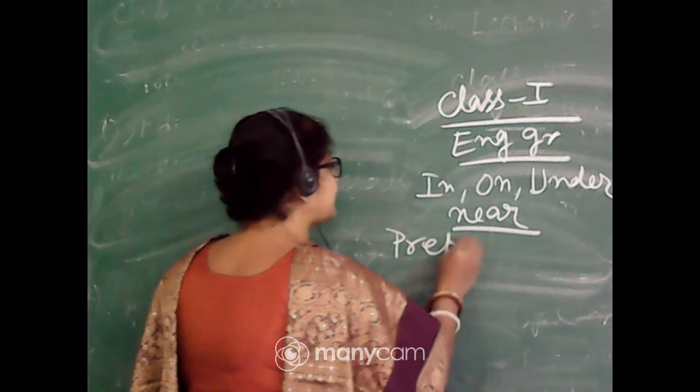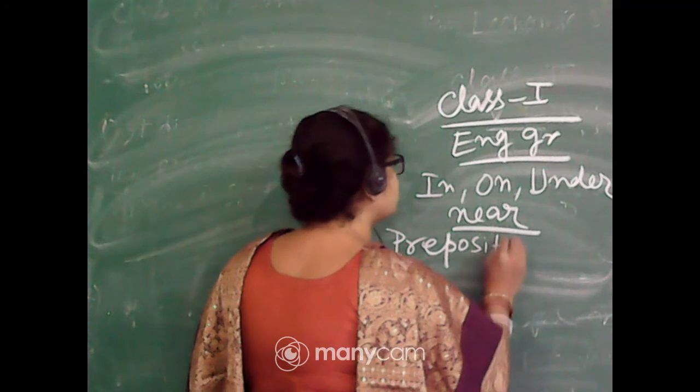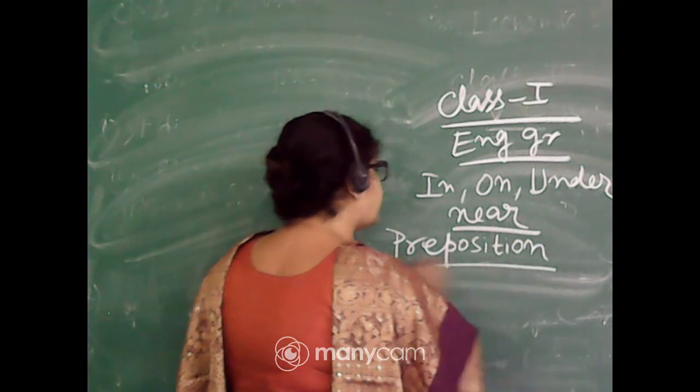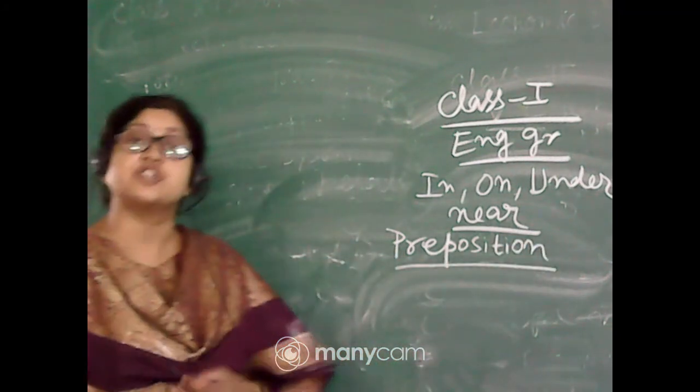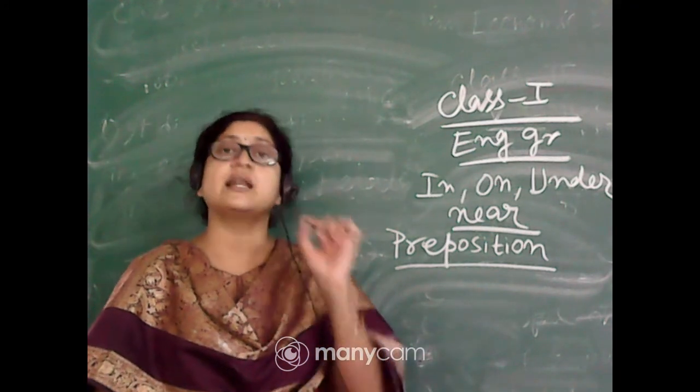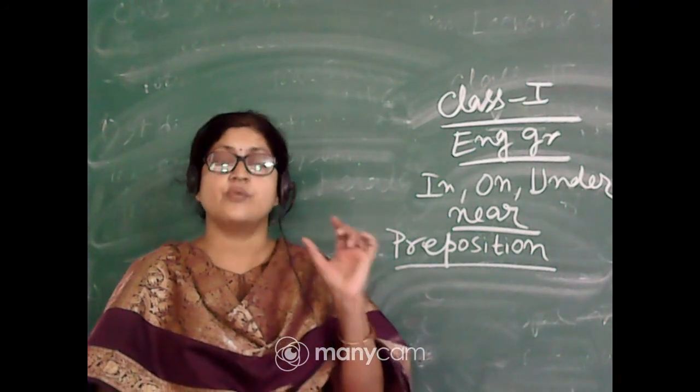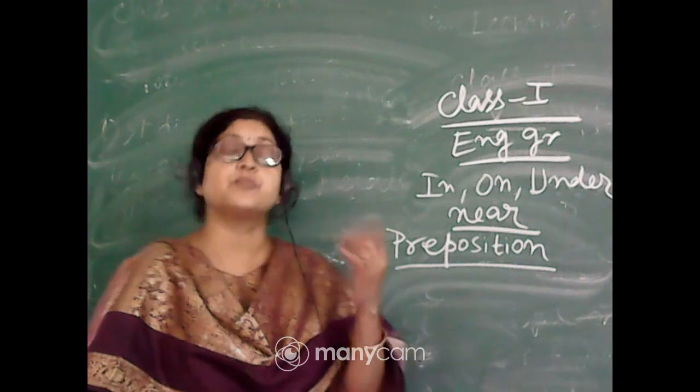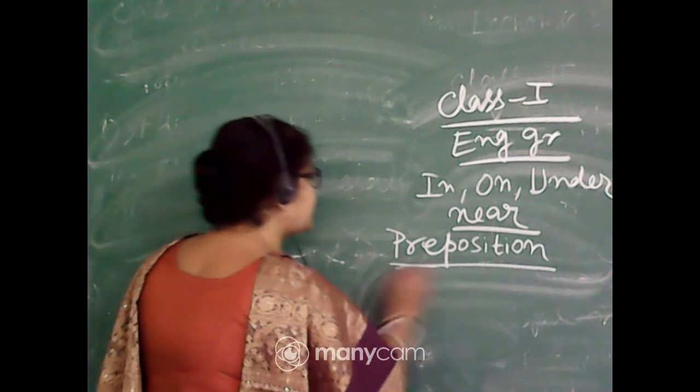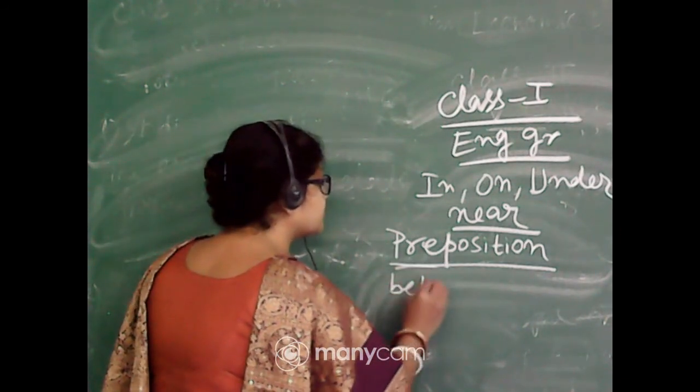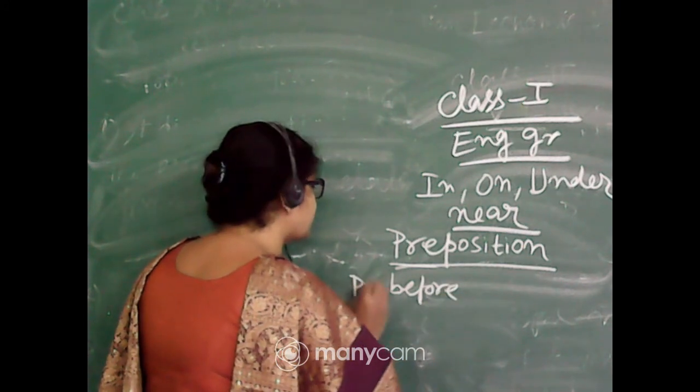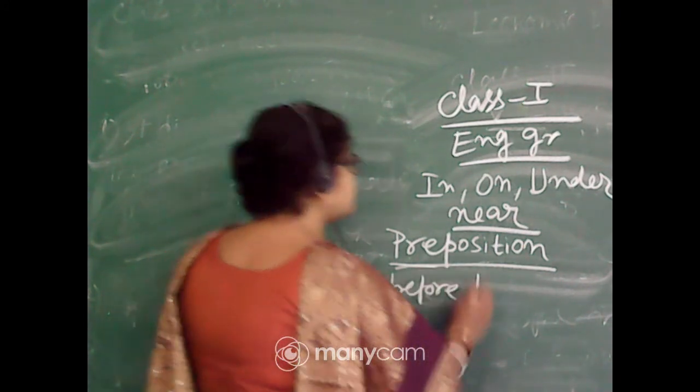Please listen and also remember this name: preposition. So what is the position of the noun in the sentence? Position means place. Pre means before. Pre means before and position means place.